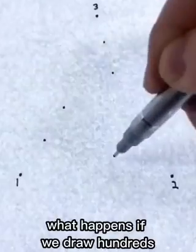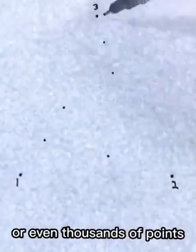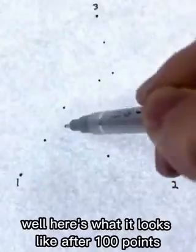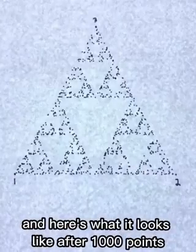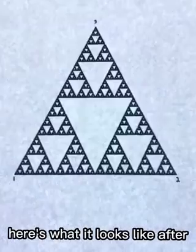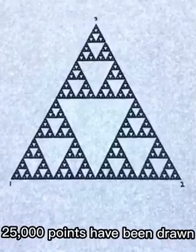The question is, what happens if we draw hundreds or even thousands of points using these two simple rules over and over? Well, here's what it looks like after 100 points, and here's what it looks like after 1,000 points, and finally, here's what it looks like after 25,000 points have been drawn.